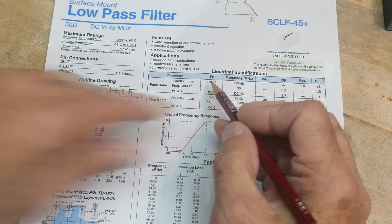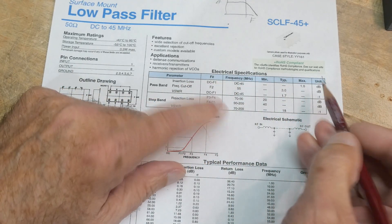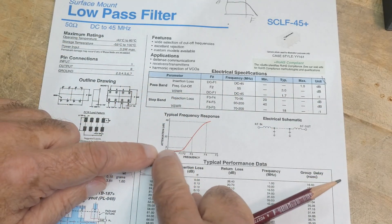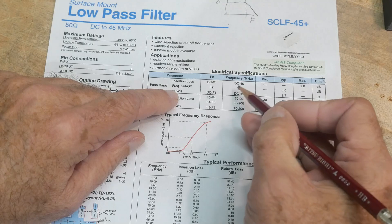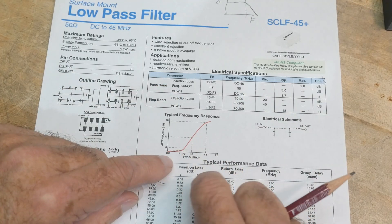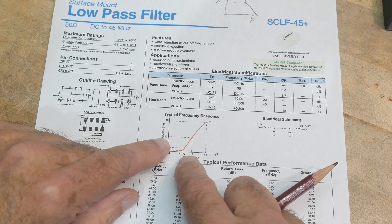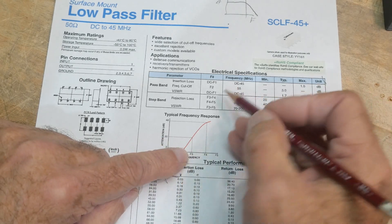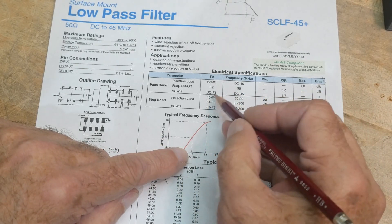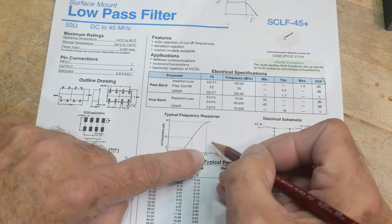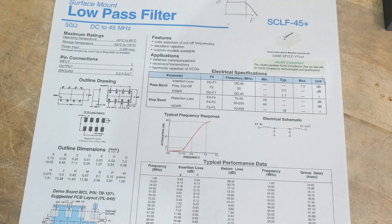So, it says here our insertion loss is about 1dB, up to 45 megahertz. And if you look here, the 3dB roll-off is at 55 megahertz. So, that's pretty cool. And then you have 20dB of attenuation at F3, which is, let's see, 70 megahertz. And F4, you have 40dB with 90 megahertz.